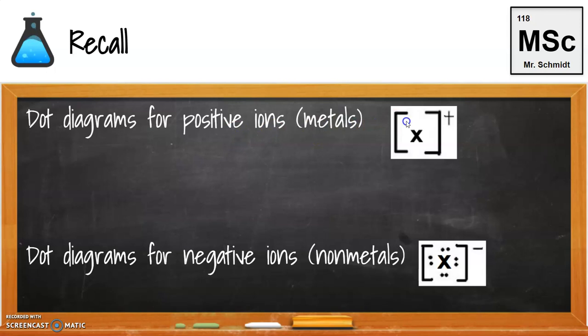Dot diagrams for positive ions, or in our case, we're talking about metals here. We have our element symbol and with a plus sign, with brackets around it. And for negative ions, the non-metals, we have our element symbol with our 8 dots, brackets, and a negative charge.